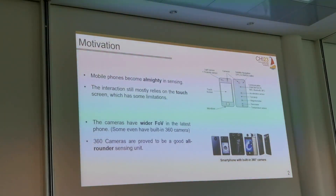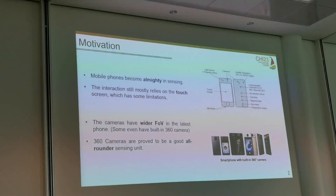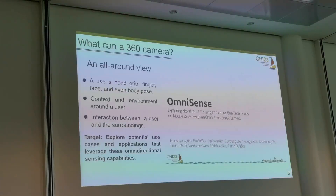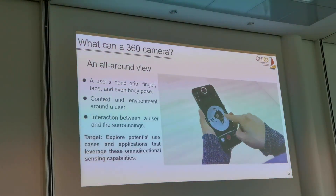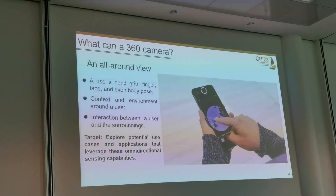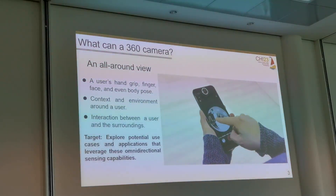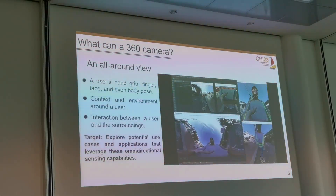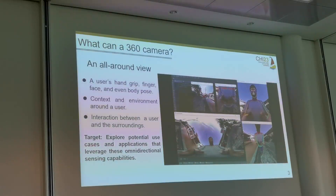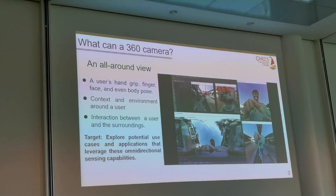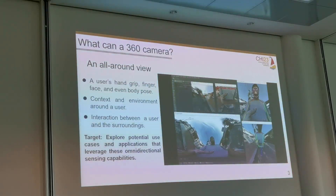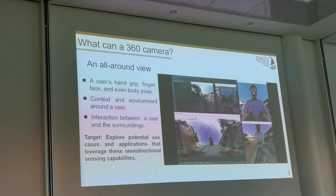On the other hand, more and more phones are equipped with cameras with a wider field of view, and some of them even have a built-in 360 camera. Since the 360 camera proves to be an all-rounder visual sensor, we believe it can also serve as a good all-in-one sensing unit for interaction. As you can see in this video, a 360 camera can capture an all-round view around the device, providing complete understanding of your hand, finger position, face, and body posture. In addition, it can sense the contents and environments around the user, enabling understanding of interaction between the user and their surroundings.